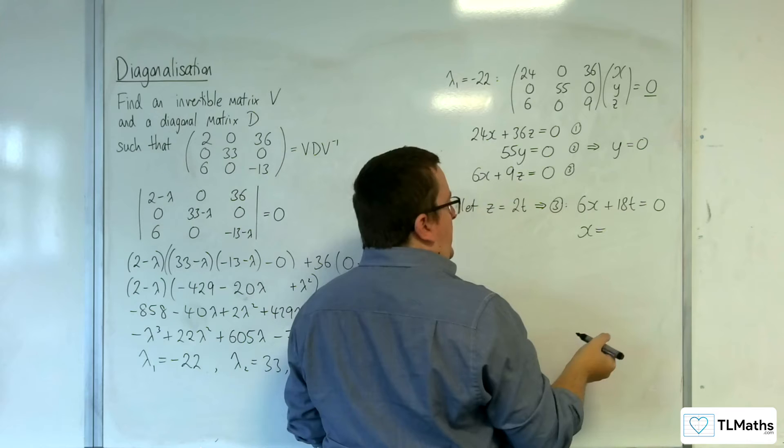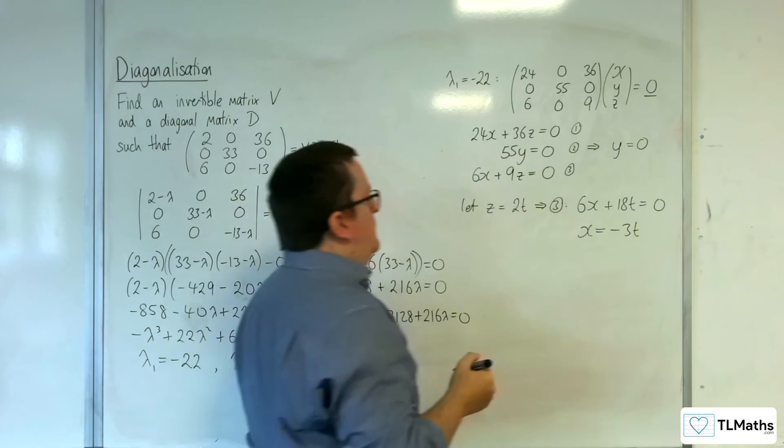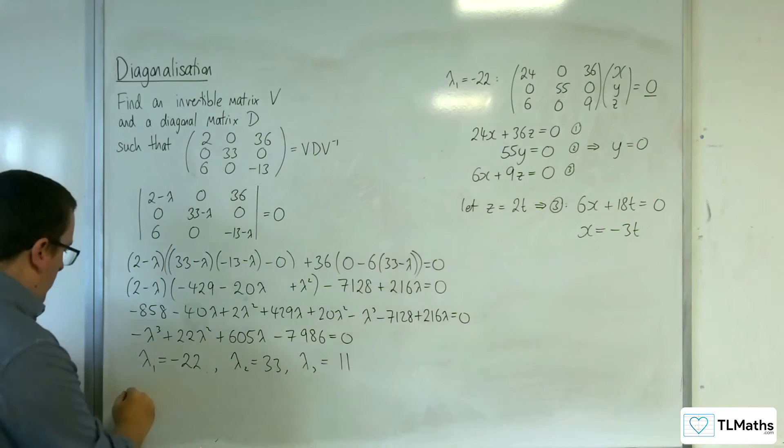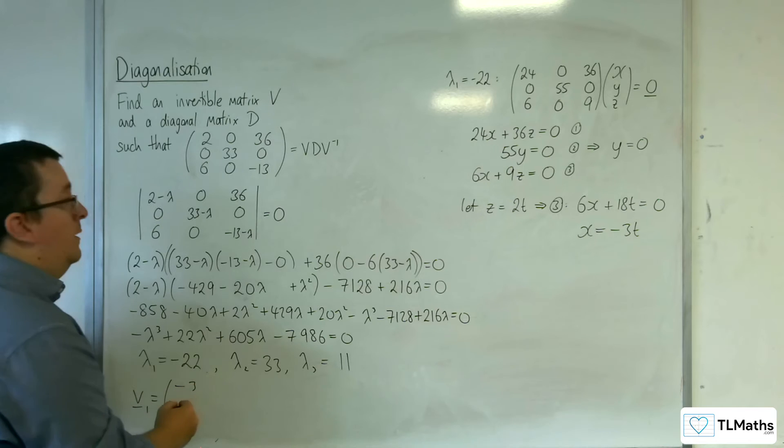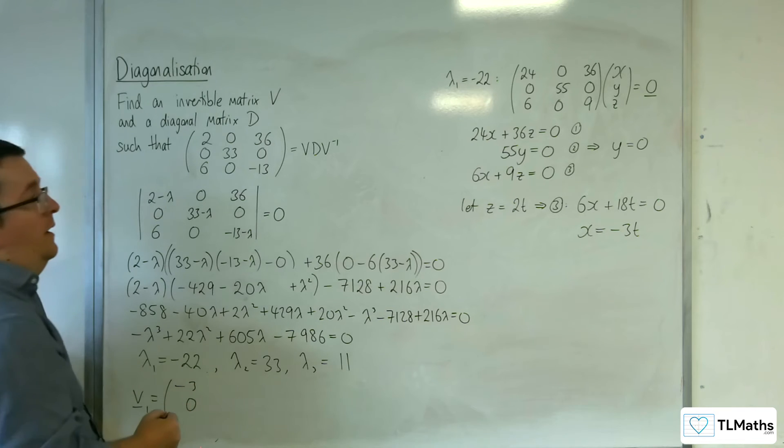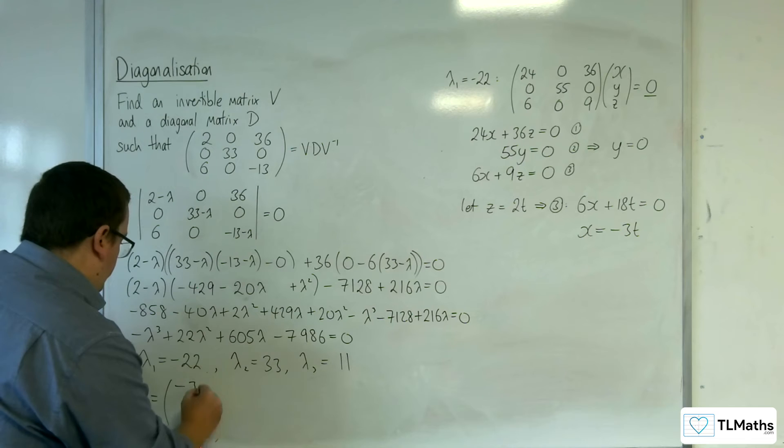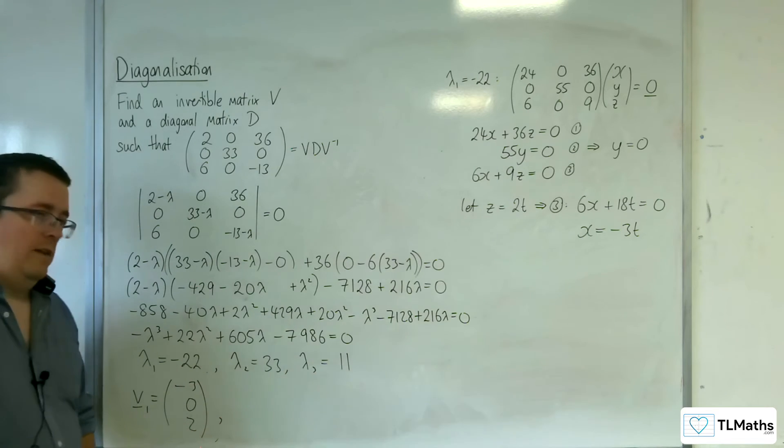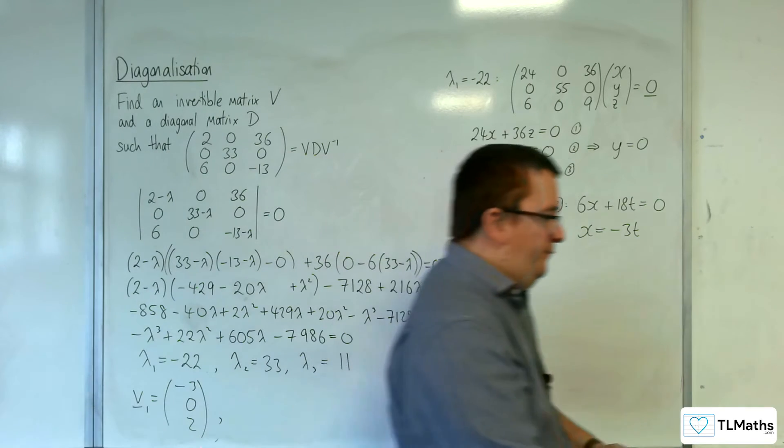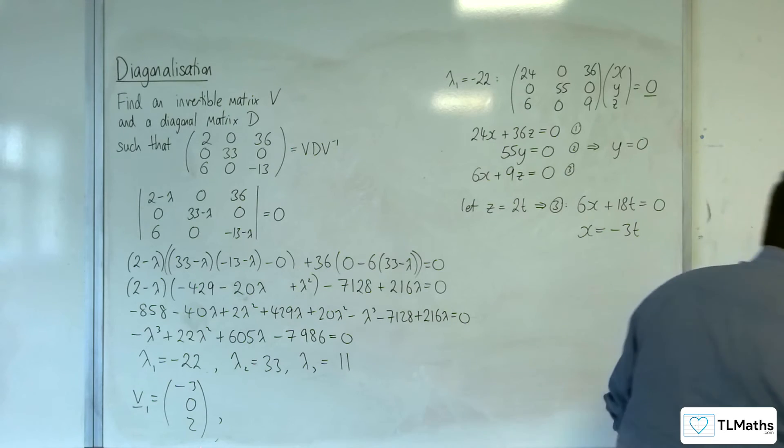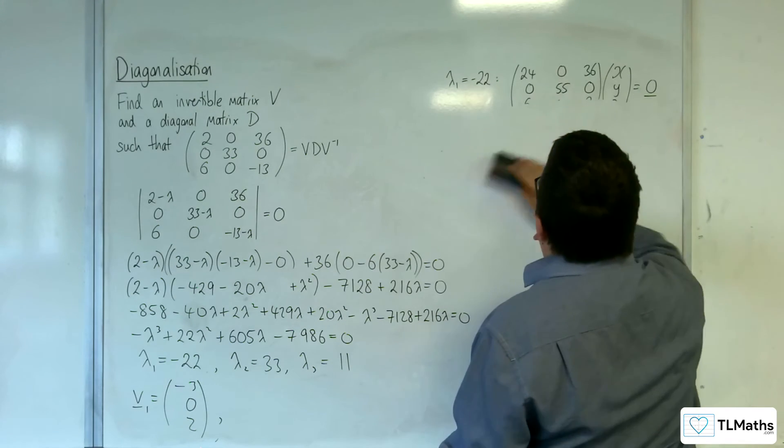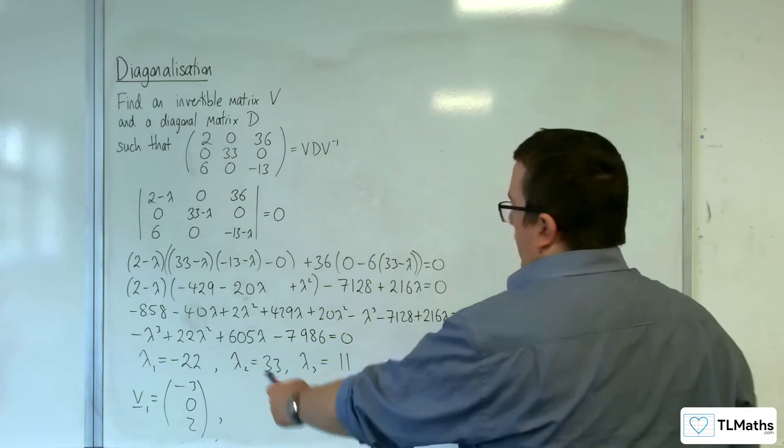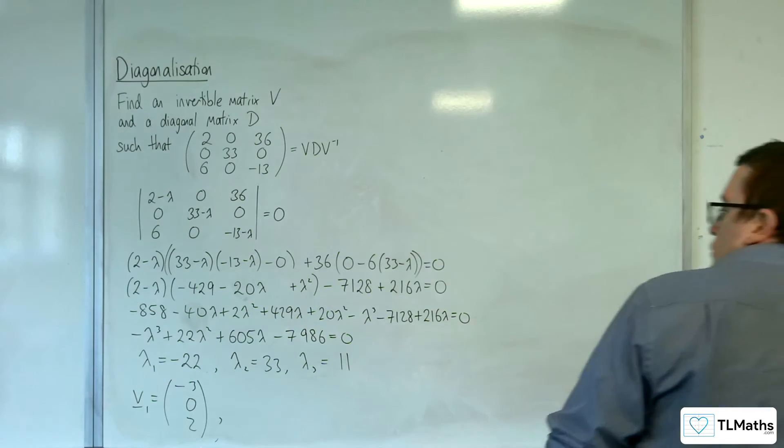So minus 18t divided by 6 is minus 3t. So v1, if we put t as 1, x is going to be minus 3, y is 0, and z is 2t, so 2. So that's v1. Now, of course, you can get fractional elements at the end, it's just nice to have integers.